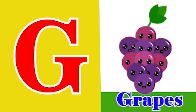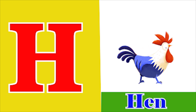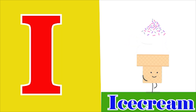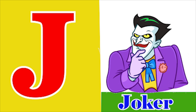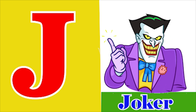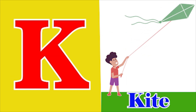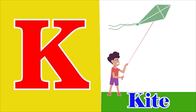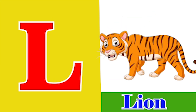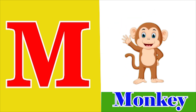G for grapes, H for hen, I for ice cream, J for joker, K for kite, L for lion.